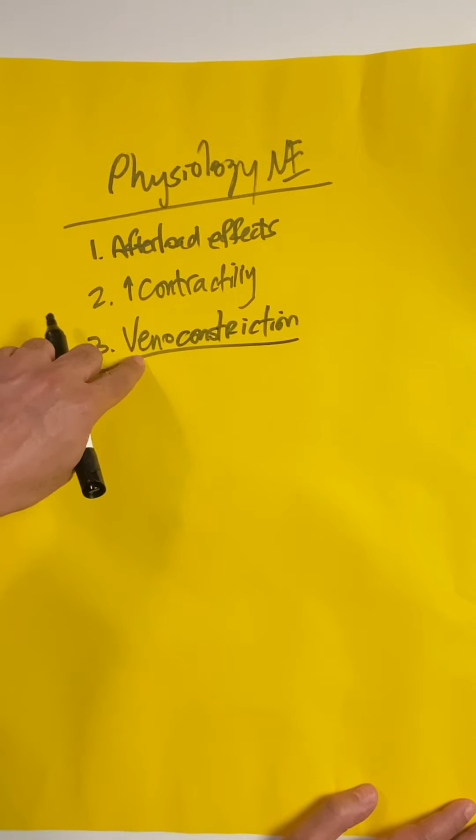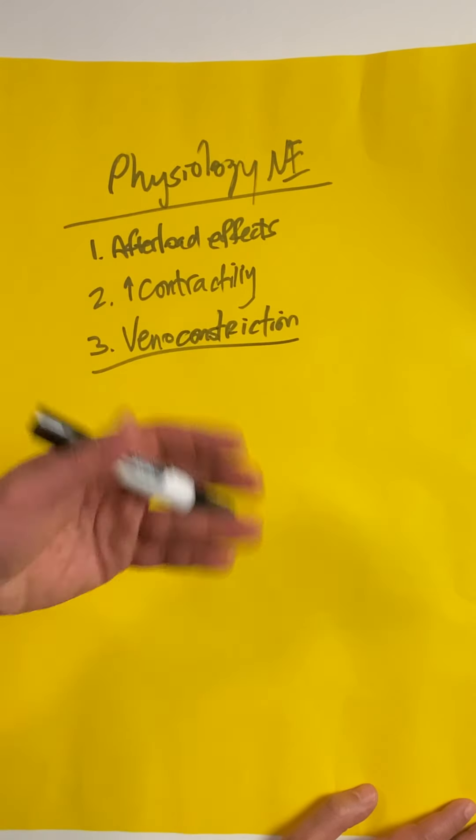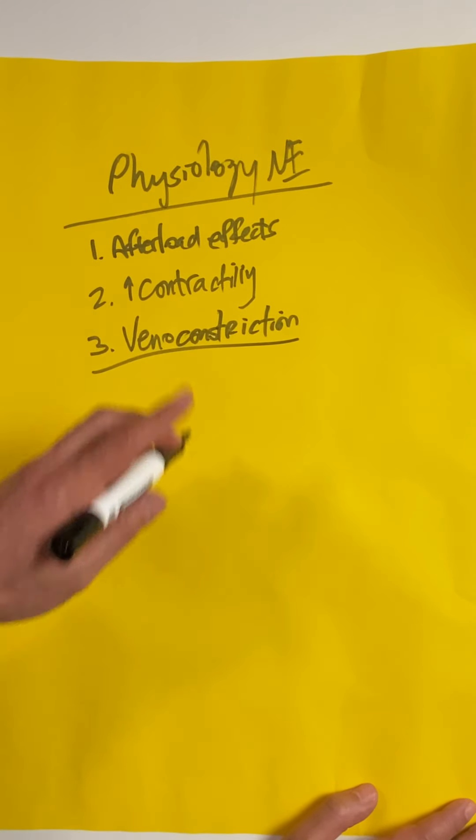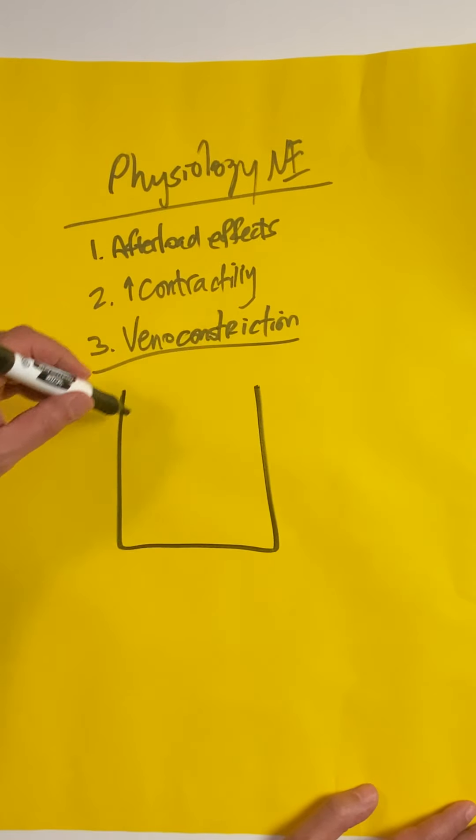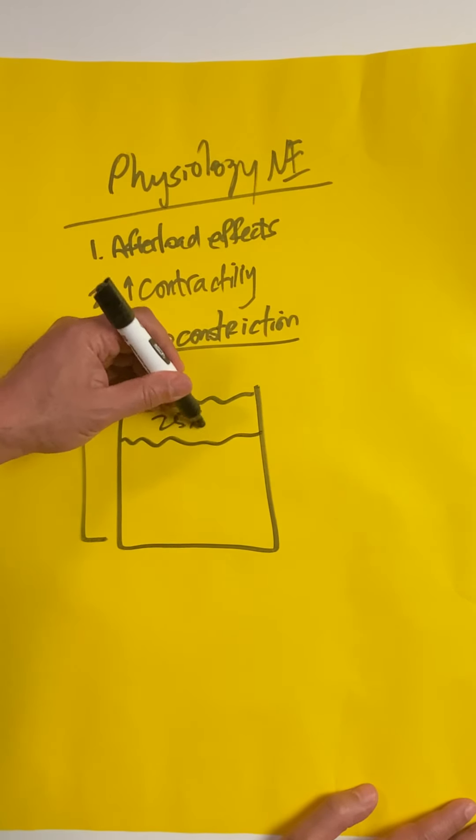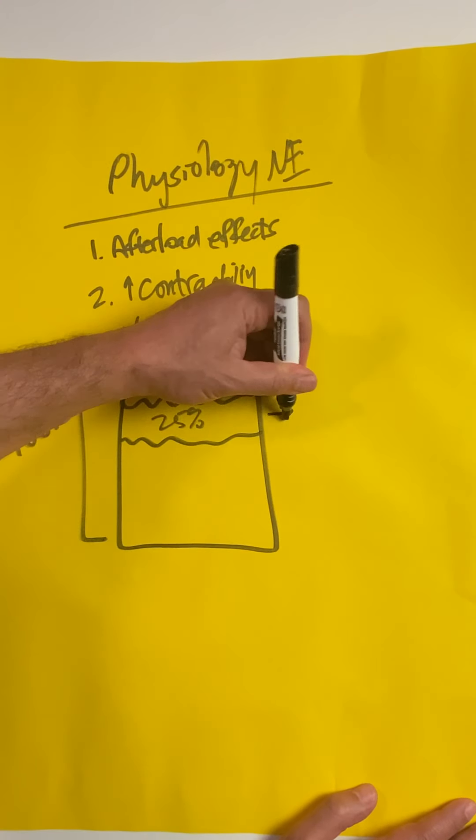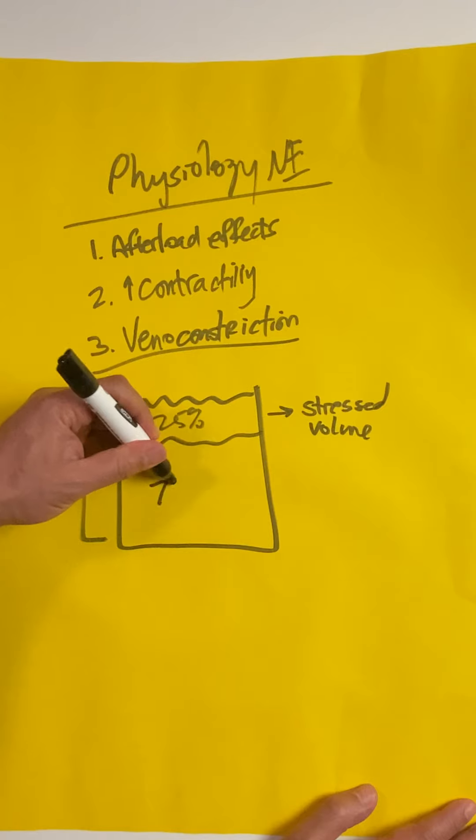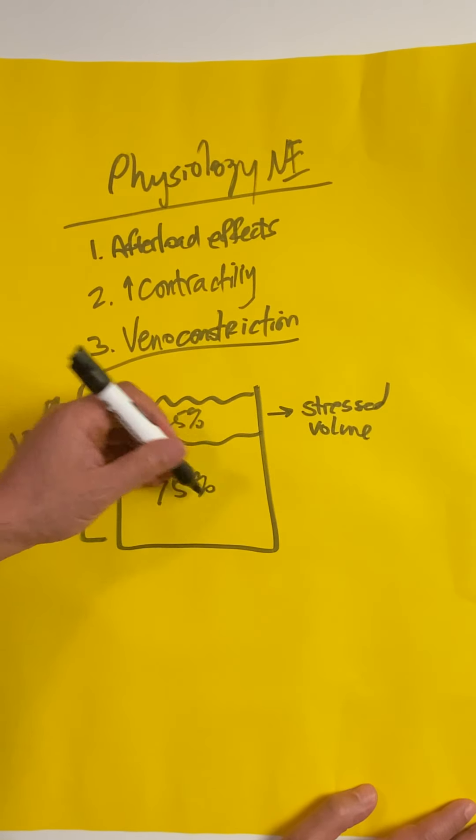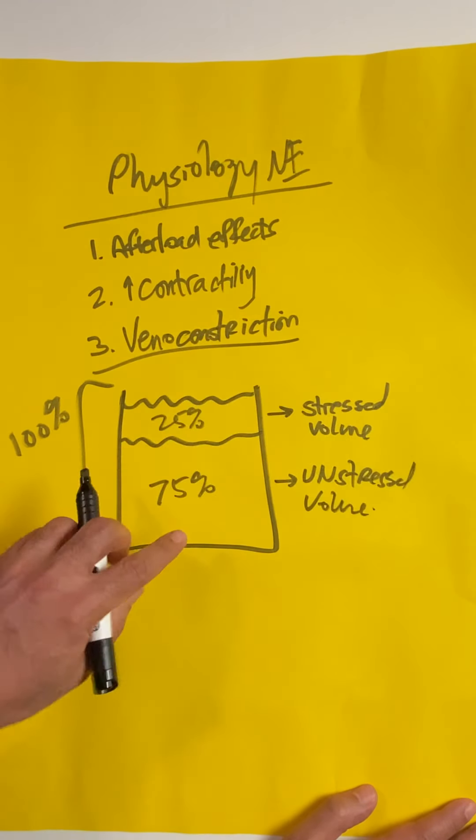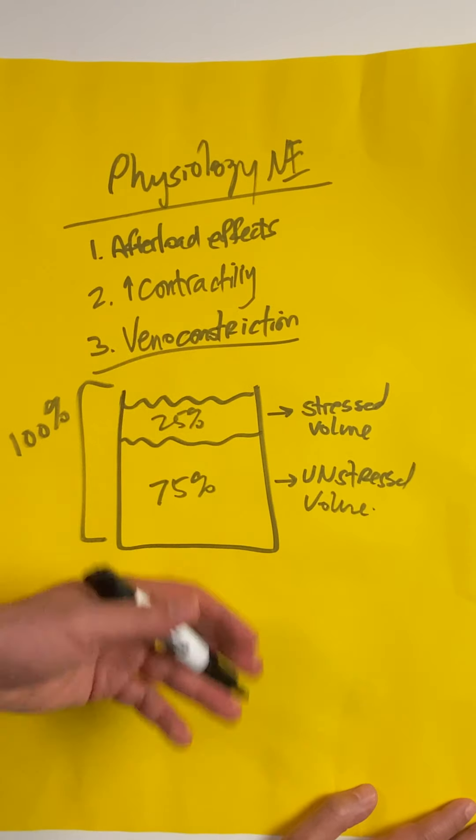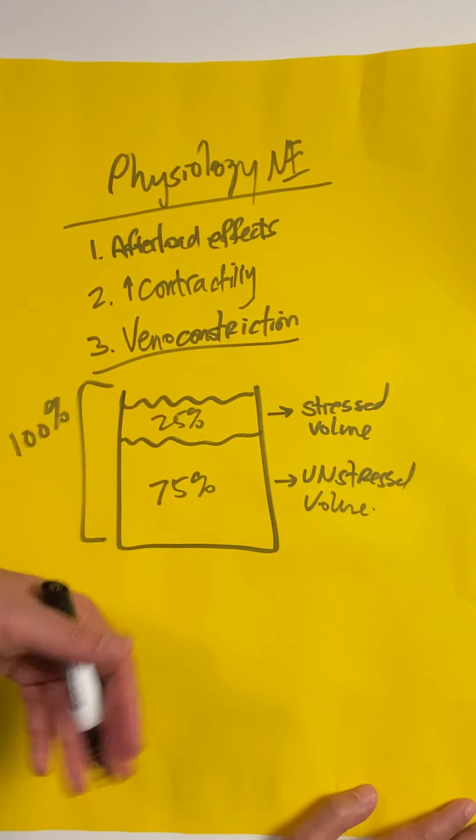Norepinephrine causes venoconstriction. You might be saying, 'Who cares about the venous system being contracted?' Here's what happens inside our body. Think about your whole intravascular space as being this bucket of water. You have 100% intravascular volume, but did you know that only 25% of that volume is participating in the circulatory system? This is what we call our stressed volume. That means 75% is in unstressed volume, just hanging around in storage in venous capacitance vessels around the body.